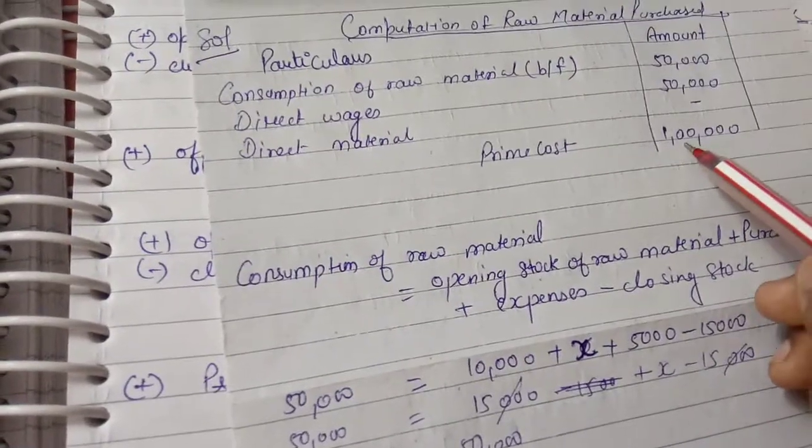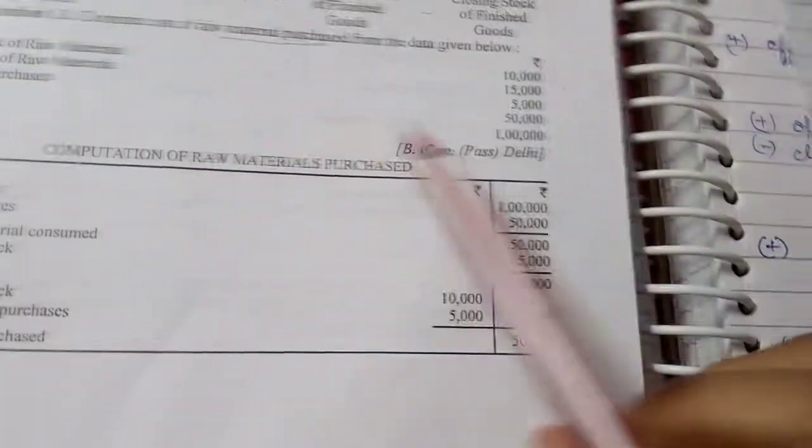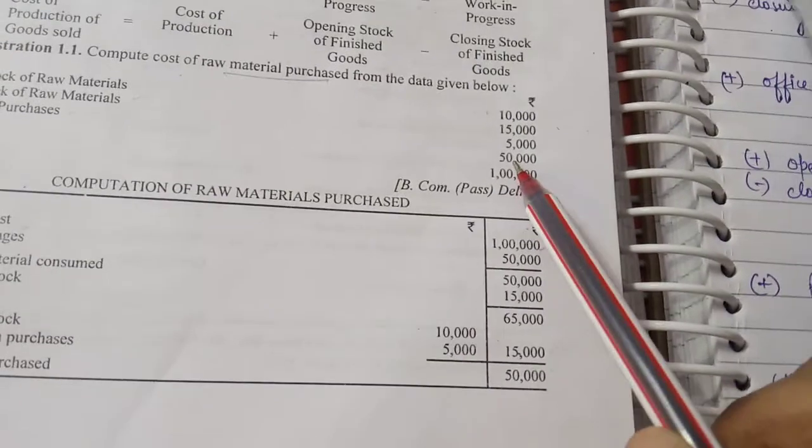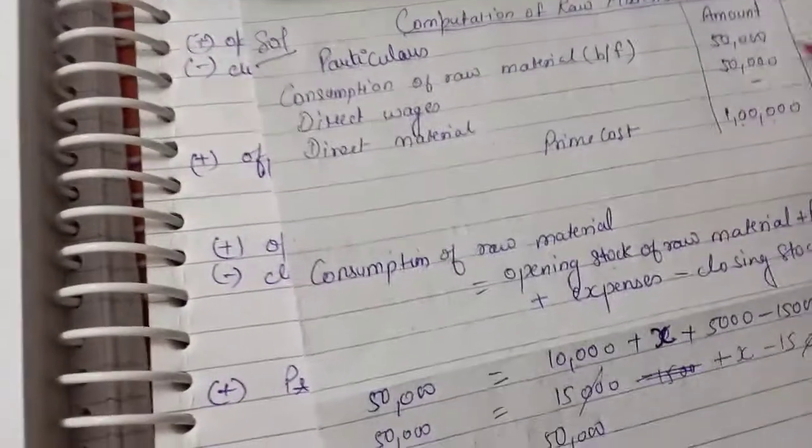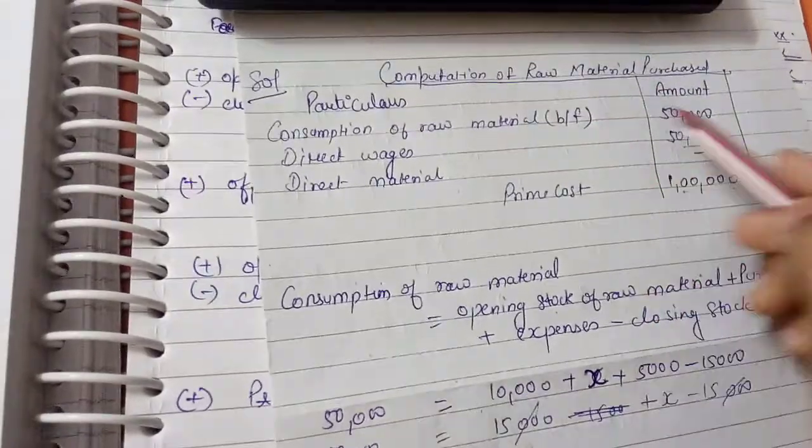You are given prime cost of rupees 1 lakh in the question, and then direct wages 50,000. So I have written 50,000, and after balance forwarding I will get the consumption of raw material.